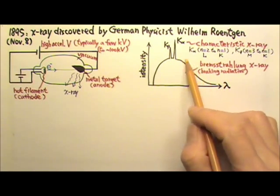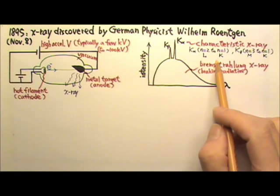I don't think you need to memorize what exactly K-alpha and K-beta are, but you should know that the discrete characteristic X-rays are from energy level transitions of electrons.